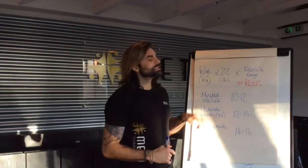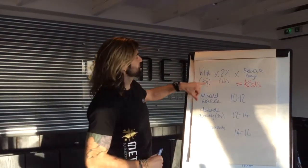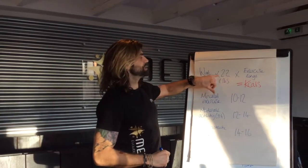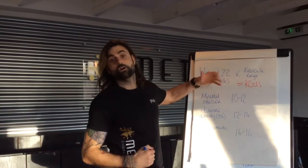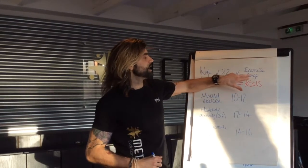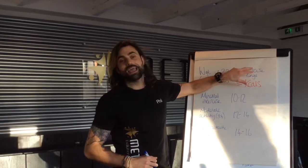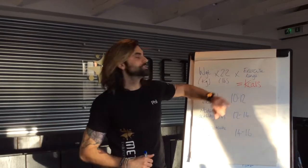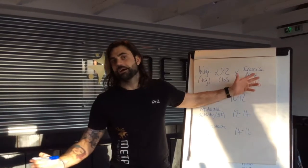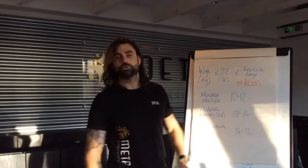The calculation we use is: your weight in kilos, times that by 2.2 to get your weight in pounds, and then times that by the exercise range — and that will give you your daily calorie allowance.